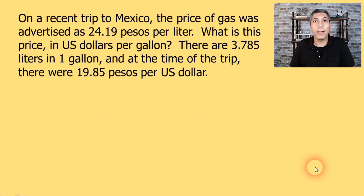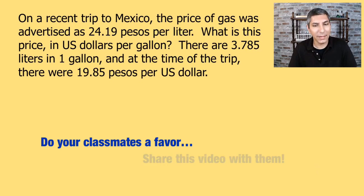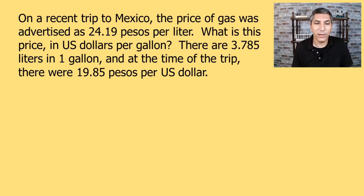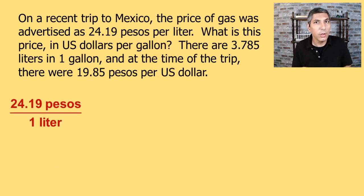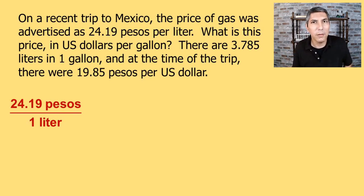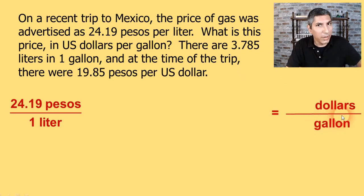Let's try one more example about the price of gasoline. On a recent trip to Mexico, the price of gas was advertised as 24.19 pesos per liter. What is this price in US dollars per gallon? There are 3.785 liters in one gallon, and at the time of the trip, there were 19.85 pesos per US dollar. We're going to start with what's given: 24.19 pesos per liter — meaning 24.19 pesos over one liter. We're trying to convert this to US dollars per gallon, so way down at the end we'll have dollars per gallon.